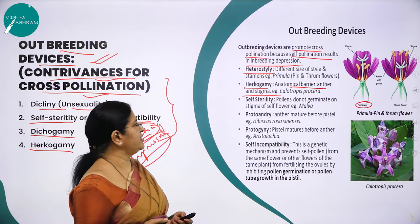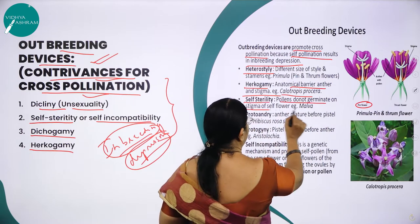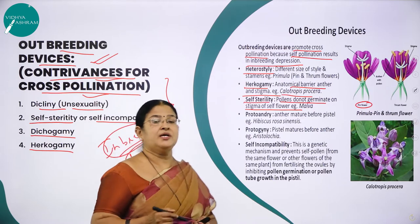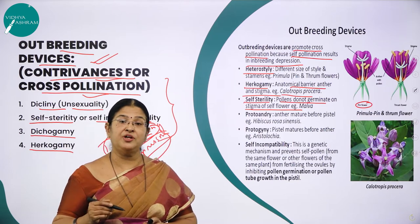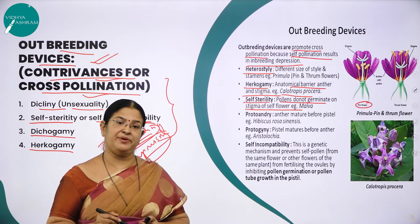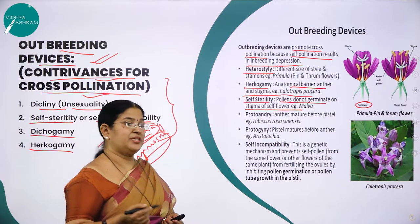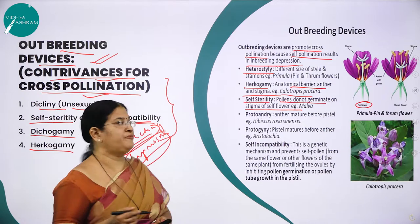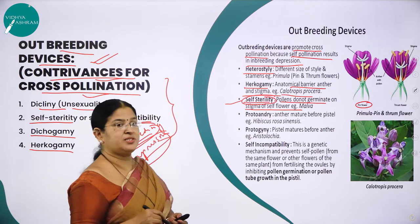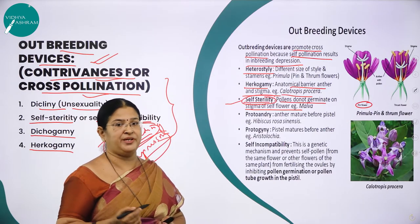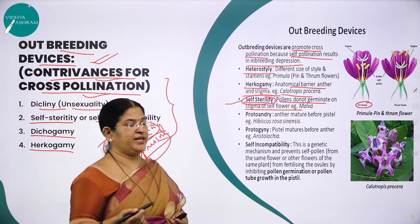Hercogamy refers to anatomical barriers which prevent the falling of pollen grains on the stigmatic surface; example is Calotropis. Self-sterility means that even if self-pollination takes place, pollen grains fail to germinate on the stigmatic surface of the same flower — the stigma is non-receptive to its own pollen.